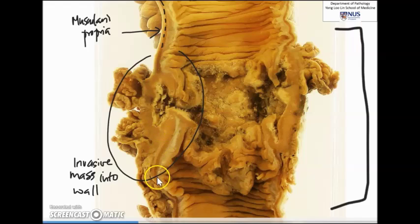The same thing you can see here, the muscularis propria is continuous here and then here it stops short because there is invasion of the tumor right through it.